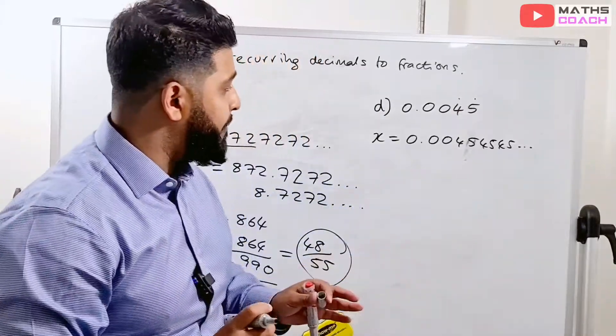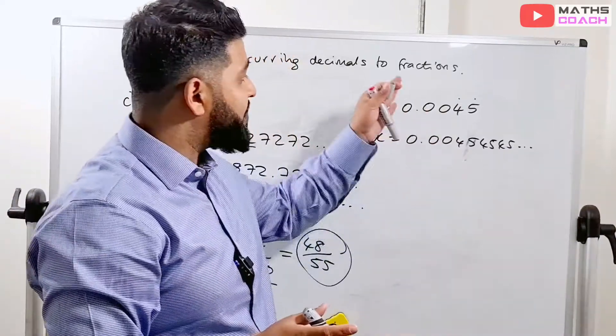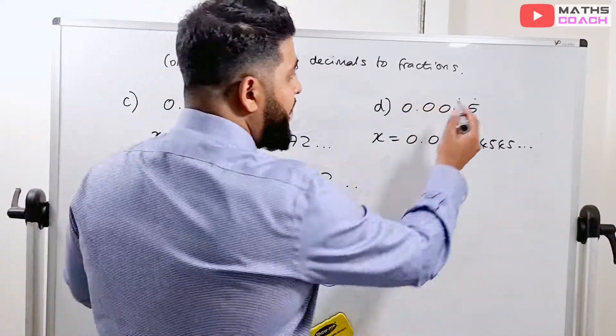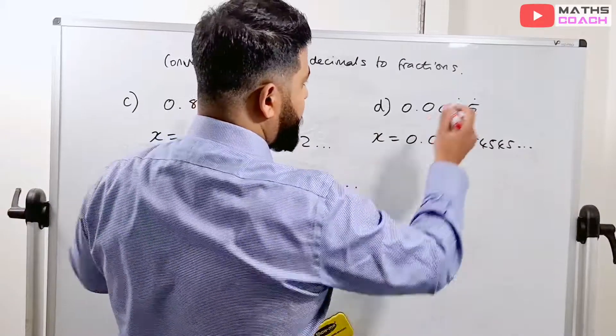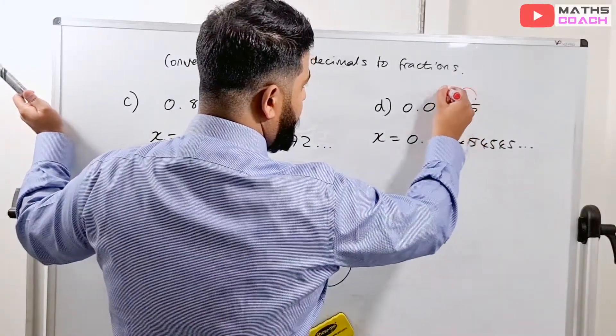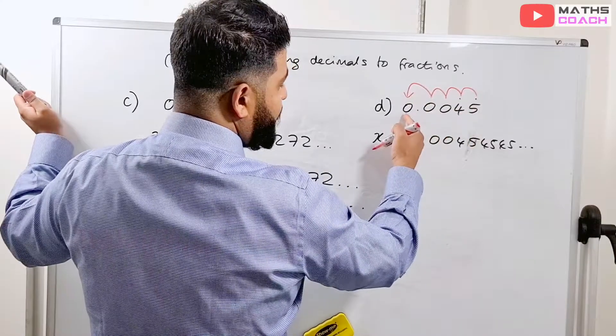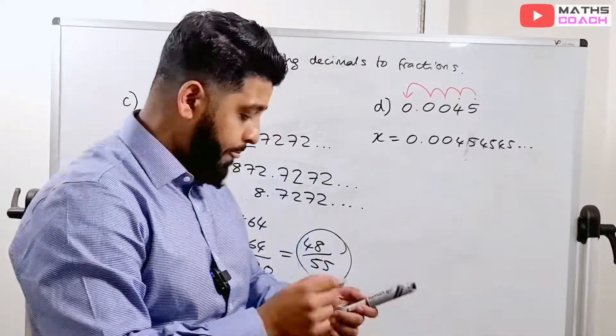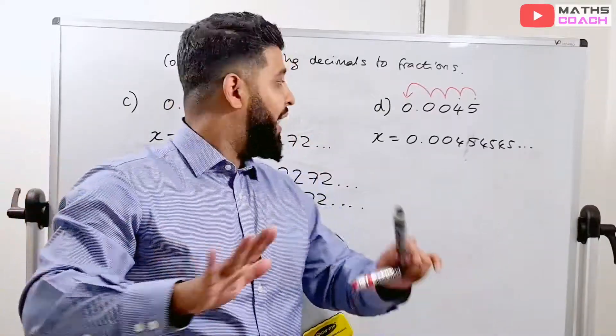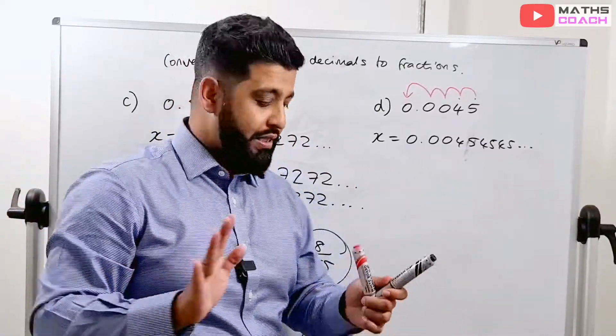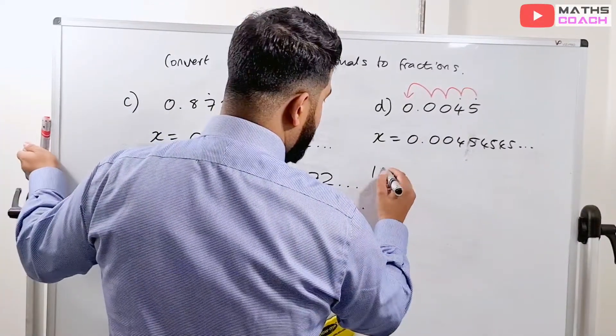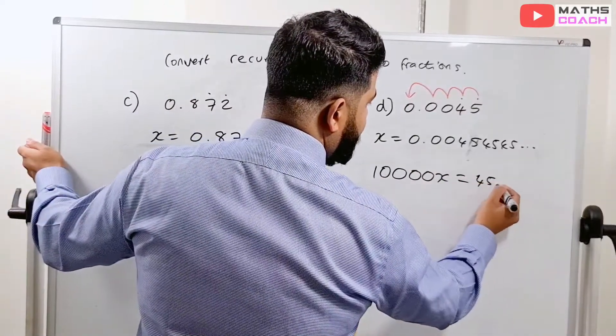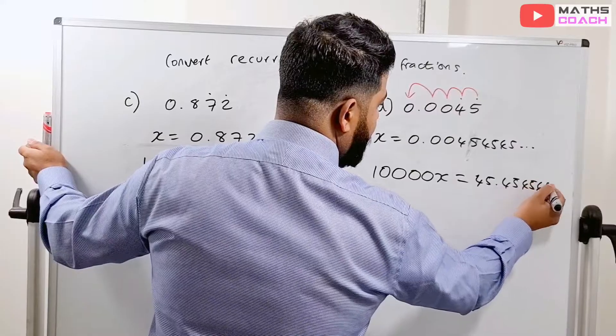Now, what do we want to do this time? We want the 4 and the 5 as whole numbers. And that will get rid of all these 0s here as well. Now, how much do they have to travel? Let's look at the 5. Let's look at 5 as our position. So 1, 2, 3, 4. In order for the 5 to be here, I have to multiply by 10 to the power of 4. Or, in fact, skip that. I have to multiply by 10,000. Let's just keep it nice and simple with the language. Let's not complicate things. So I have to multiply by 10,000. I've got 10,000x, which gives me 45.454545...